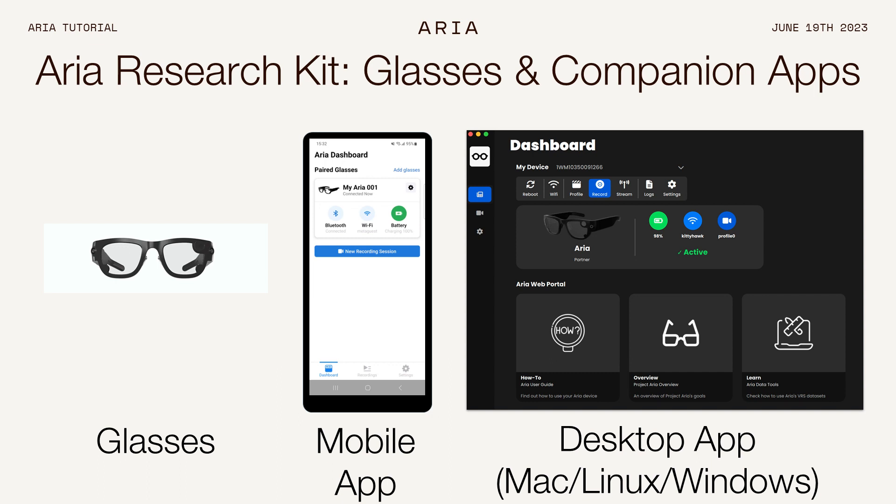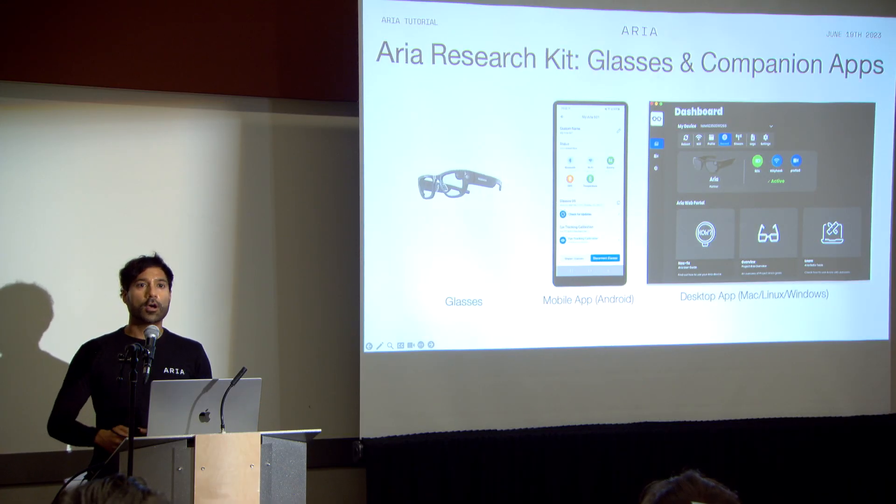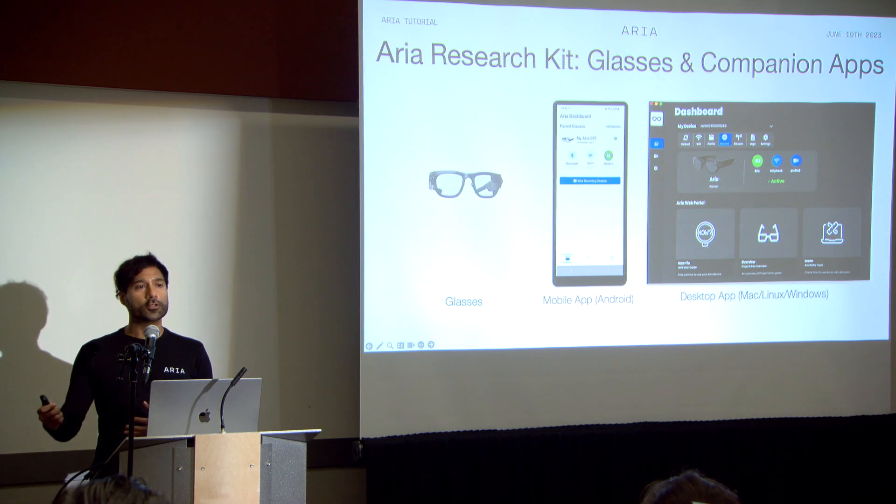The motivation behind building the ARIA glasses was really to provide researchers with two things. One is the ability to collect multimodal egocentric sensor data in the types that we expect on future AR glasses. And the second is to do this in a socially acceptable form factor that enables long-duration usage that is ecologically valid — so it does not impact the activities and behaviors of the wearer.